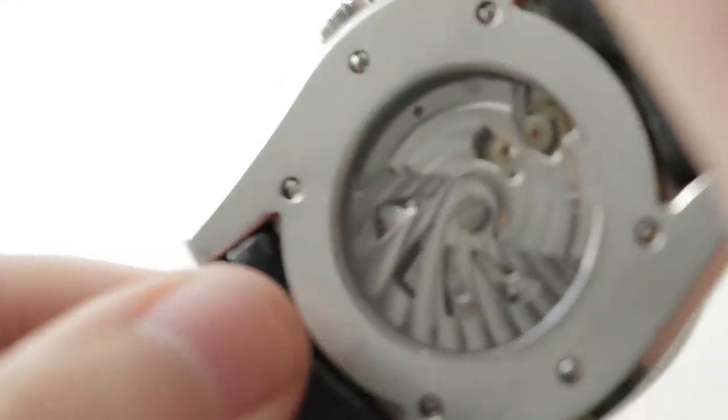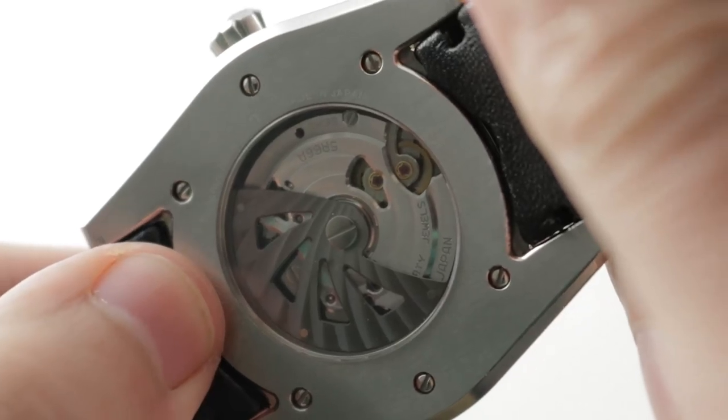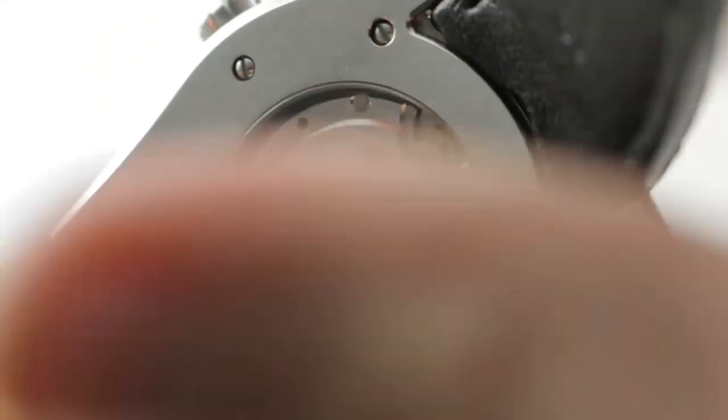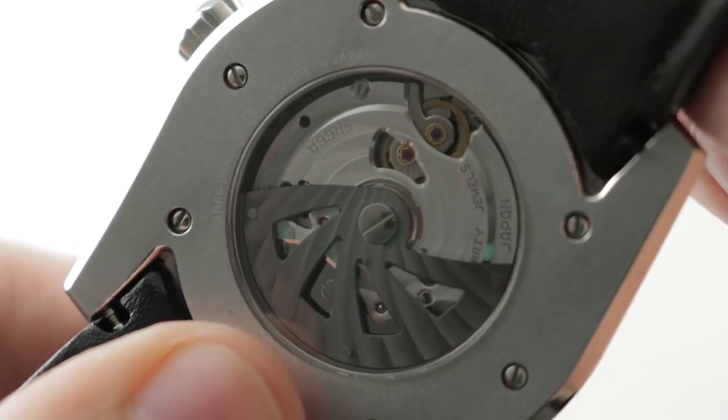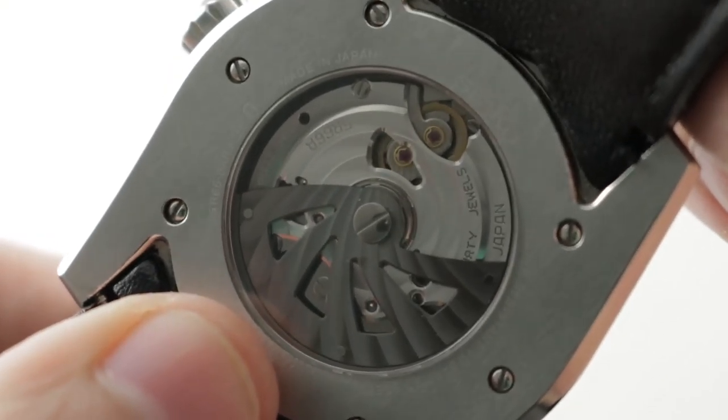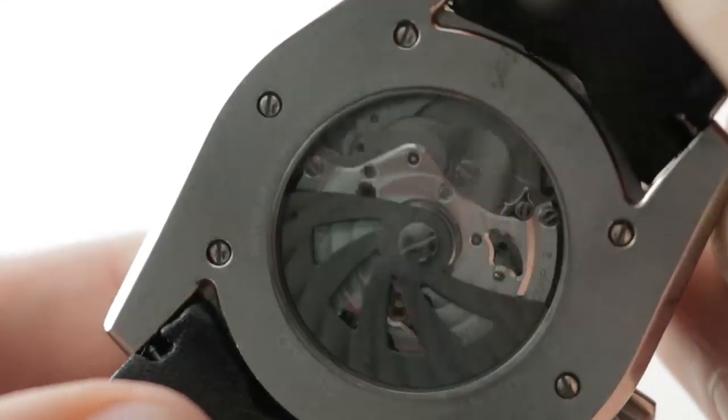Now turn the watch over and you can see the Seiko spring drive, manufactured caliber 5R66. 30 joules, watchmaker built, watchmaker regulated. It has a precision of plus or minus 15 seconds per month and a 3 day automatic winding power reserve.